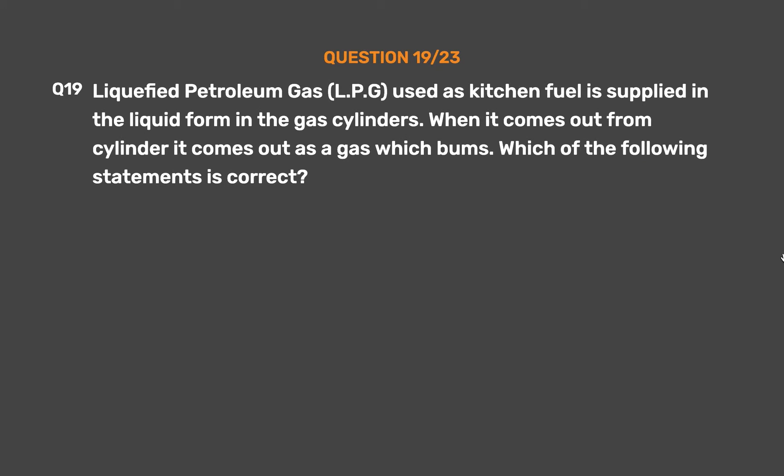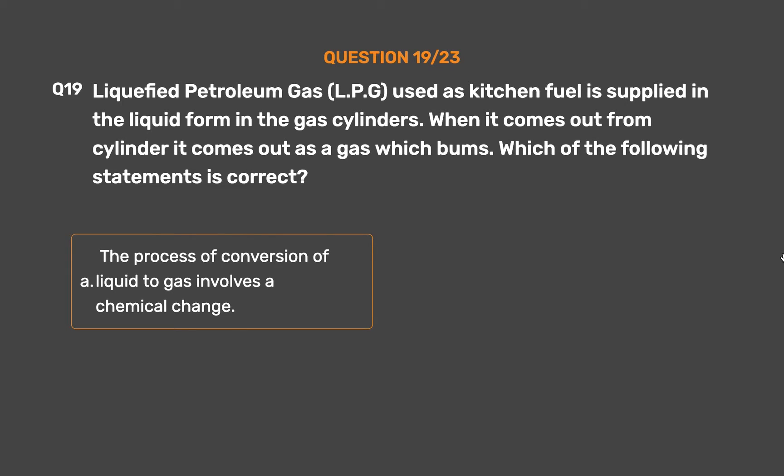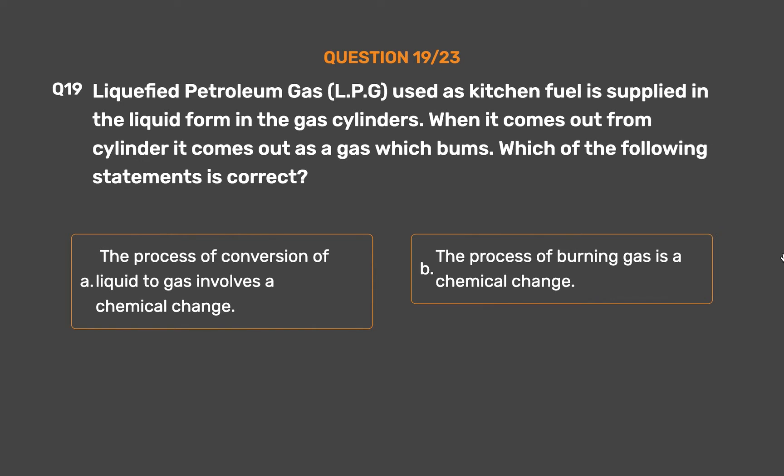Question number 19. Liquified petroleum gas (LPG), used as kitchen fuel, is supplied in liquid form in gas cylinders. When it comes out from the cylinder it comes out as a gas which burns. Which of the following statements is correct? Option A: The process of conversion of liquid to gas involves a chemical change. Option B: The process of burning gas is a chemical change.